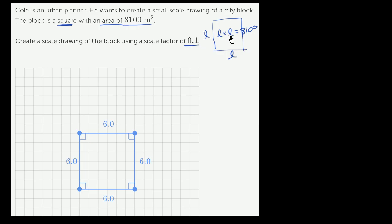So what times itself is equal to 8,100? Well, the 81 might jump out at you. We know that 9 times 9 is equal to 81.